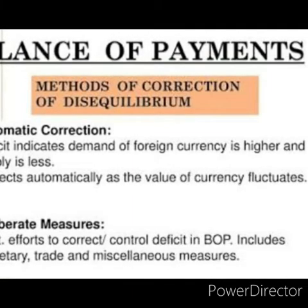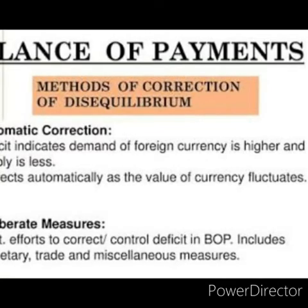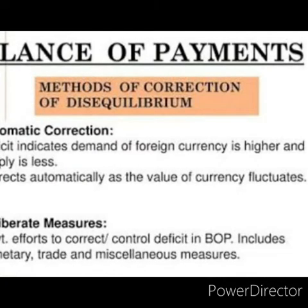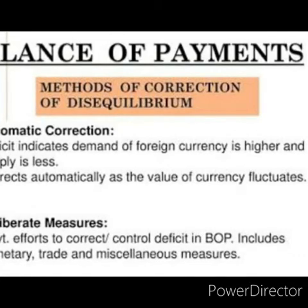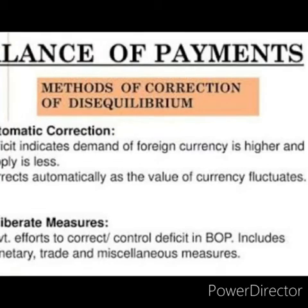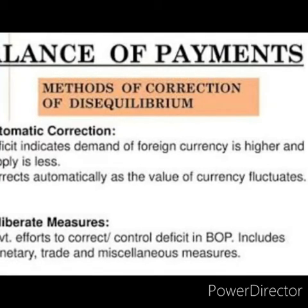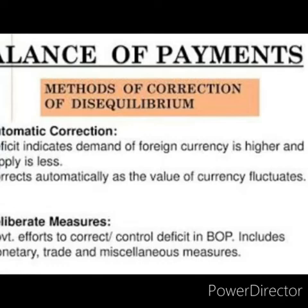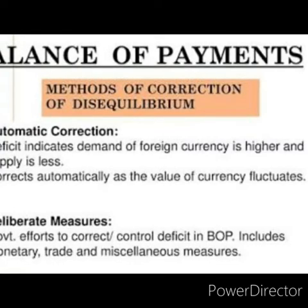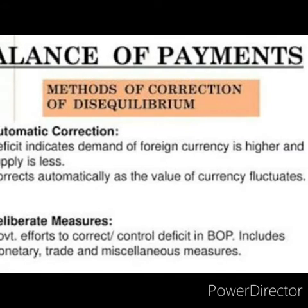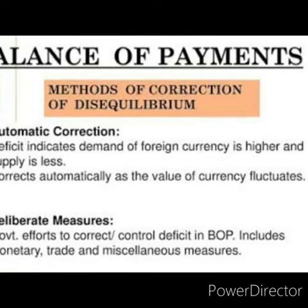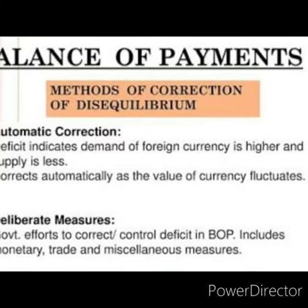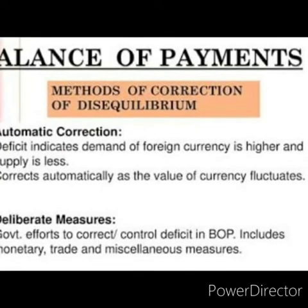The deficit country wants to export products and the surplus country is having surplus money. So the surplus country will increase its imports and the deficit country will increase its exports. The deficit country is not having money, so to get foreign money they will export their goods. The surplus country already has so much money, so they will increase imports.